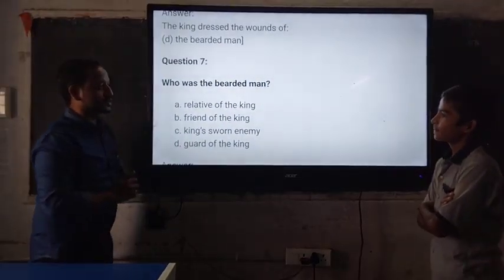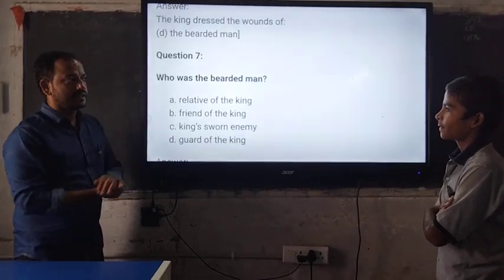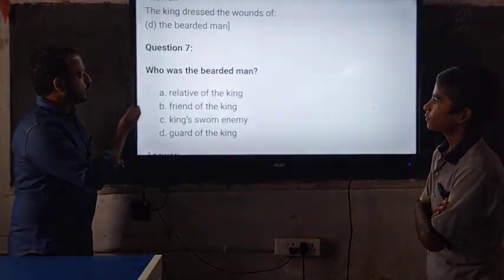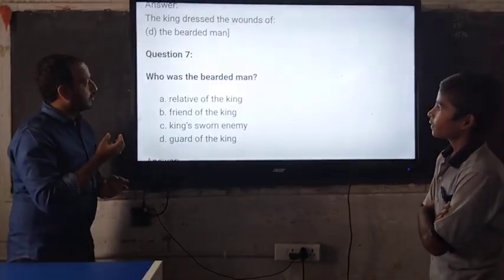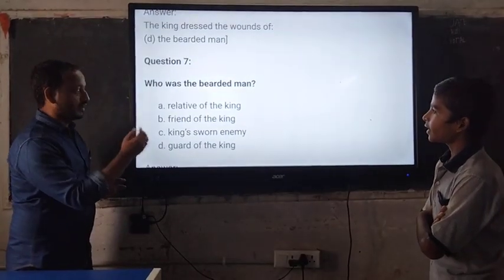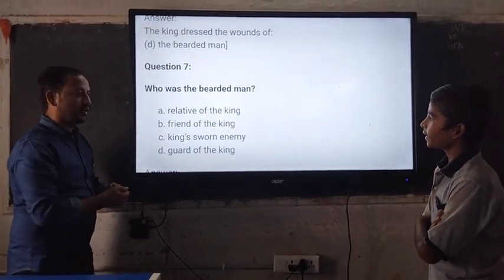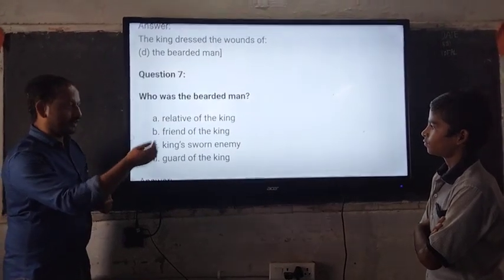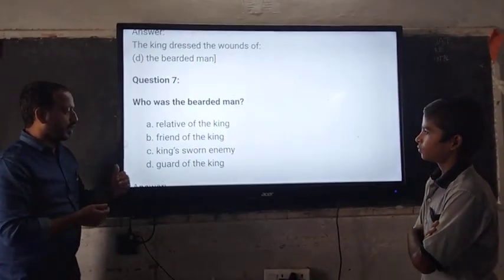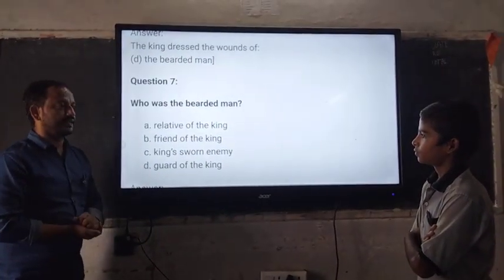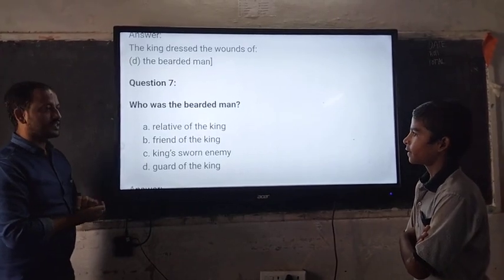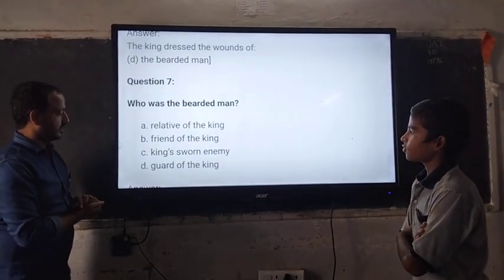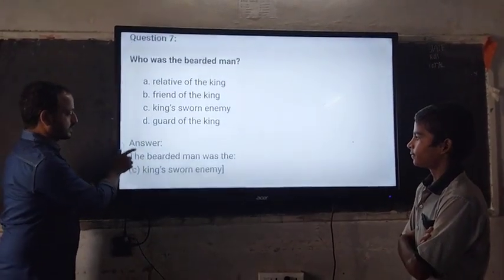The next question goes to our powerful student. Who was the bearded man? A. A lady of the king. B. A friend of the king. C. King's enemy. D. God of the king. Which one is correct? C. King's enemy. Wonderful. Clap.